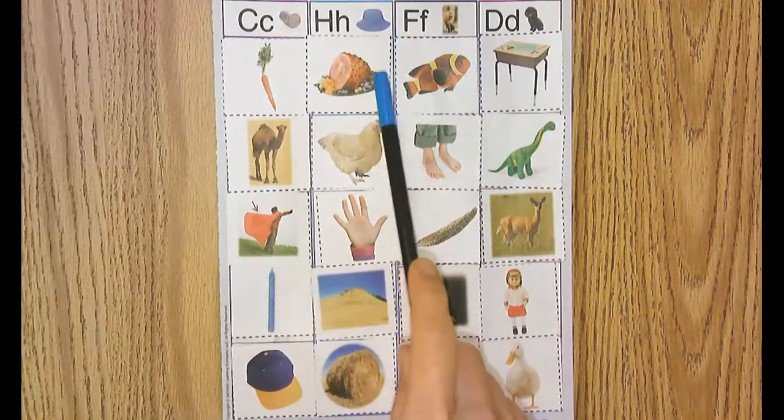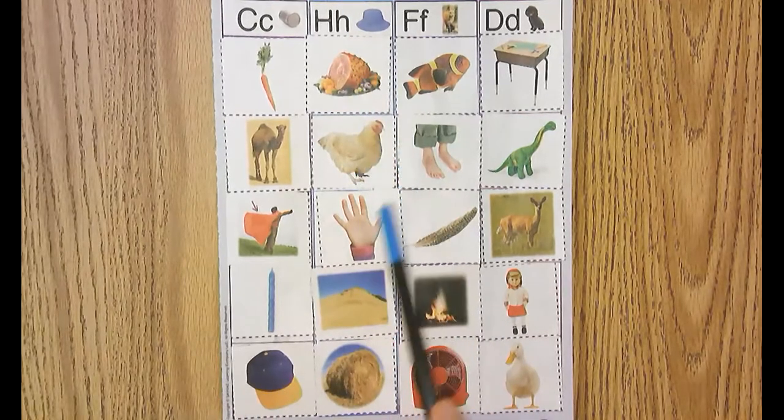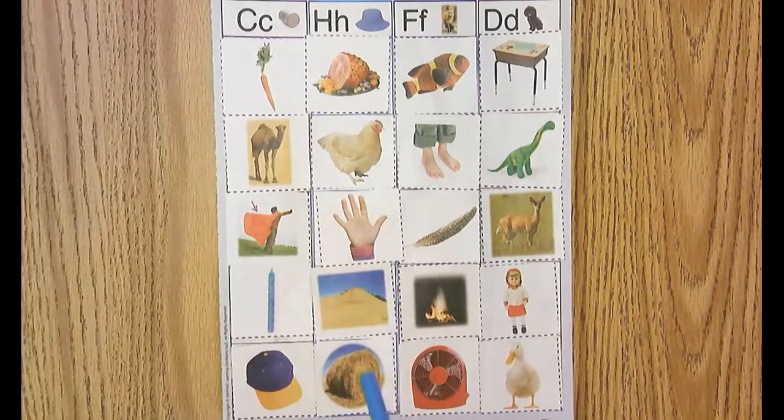In the column h, we have ham, hen, hand, hill, and hay.